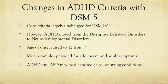The onset age threshold was raised to 12 from seven, and there are now more examples provided for adolescent and adult symptoms. Probably one of the more important changes is that ADHD and ASD can for the first time be diagnosed as co-occurring conditions.